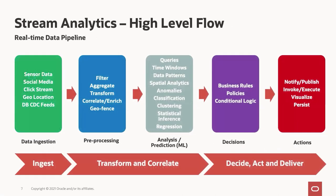Let's look at the high-level process of creating a real-time data pipeline. There are three main stages that can be broken into five sub-stages. The first stage is data ingestion, where you bring in data from various sources like sensor data, social media data, clickstream data, or database change data capture. That raw data is not ready for processing into algorithms or models, so you need to do pre-processing — transformations on an ETL tool, such as filter or aggregate transformations, correlation, lookup, and similar operations.